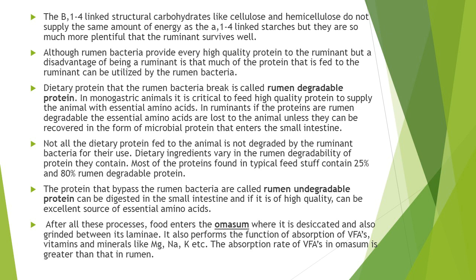After all these processes, the food enters the omasum where it is desiccated, meaning its water content is removed. It is also ground between the laminae of the omasum. The omasum also performs the function of absorption of volatile fatty acids, vitamins, and minerals like magnesium, sodium, and potassium. The absorption rate of volatile fatty acids in the omasum is greater than the absorption rate of volatile fatty acids in the rumen.